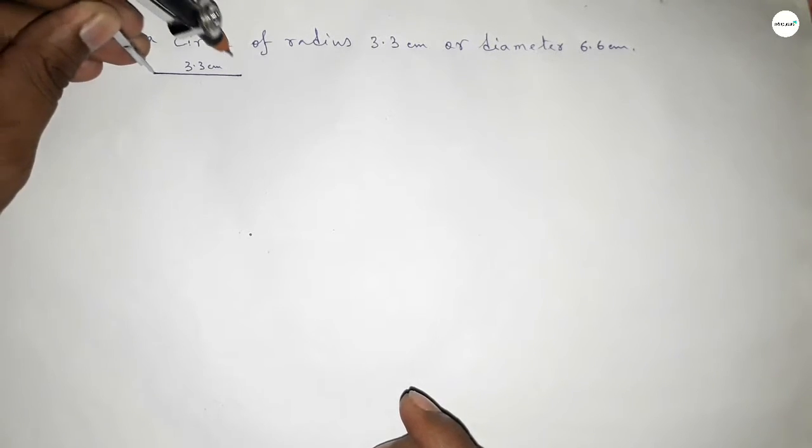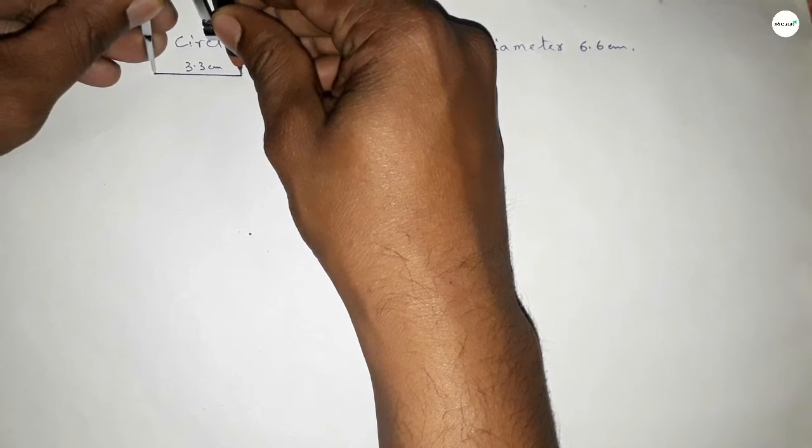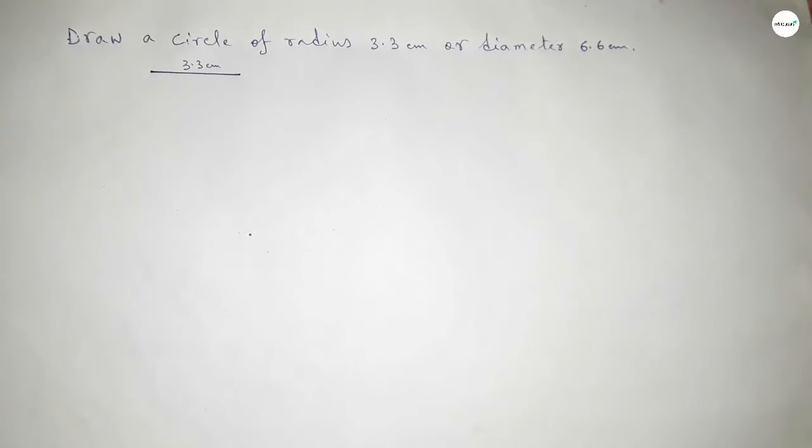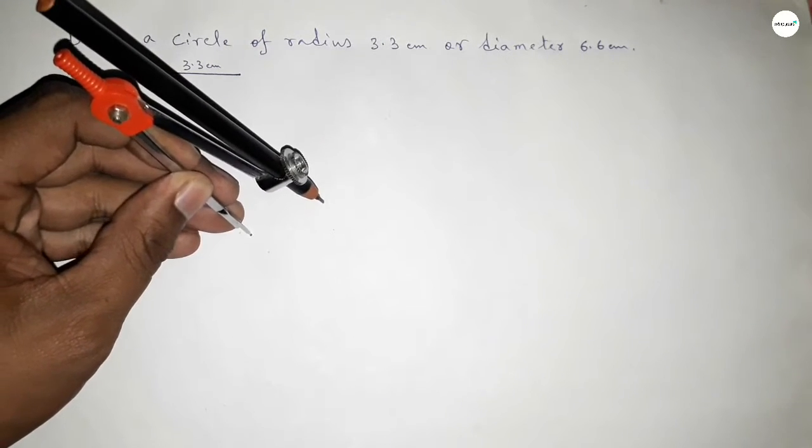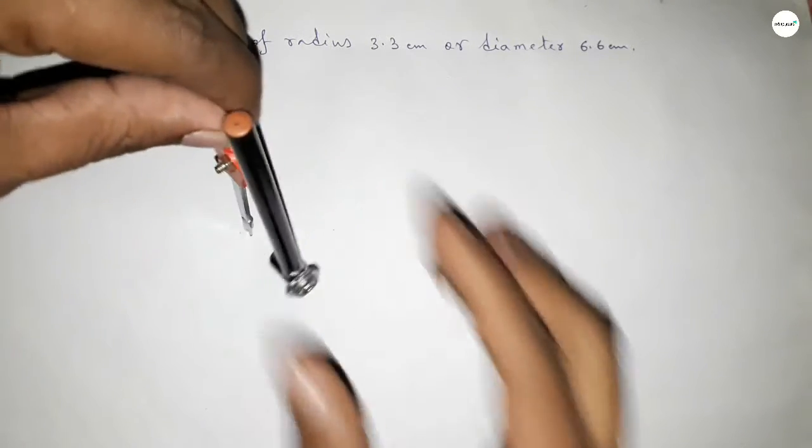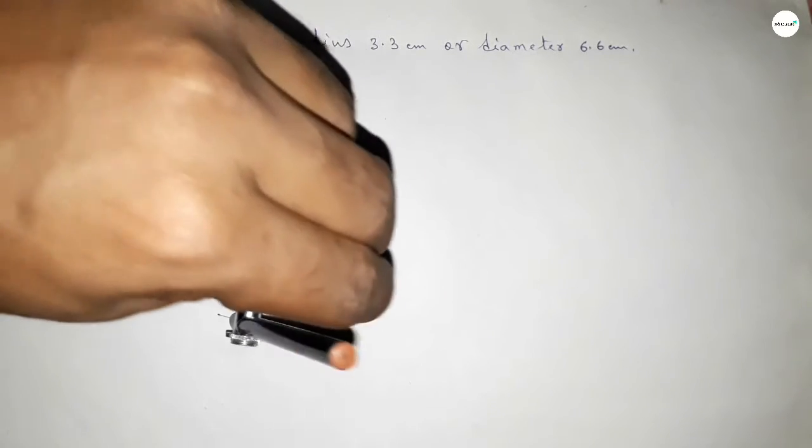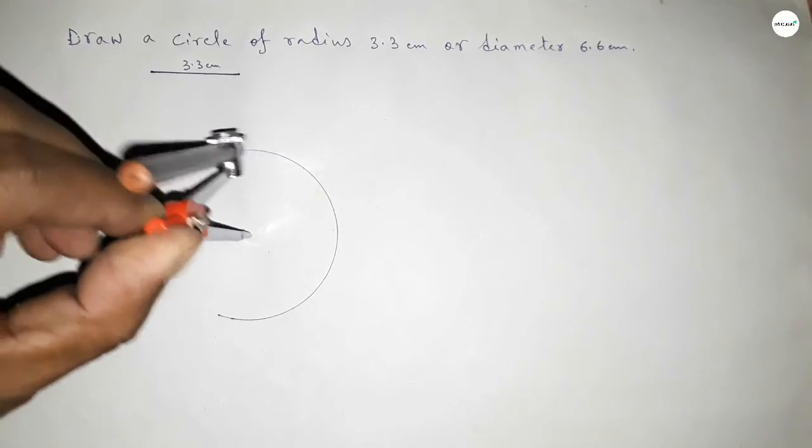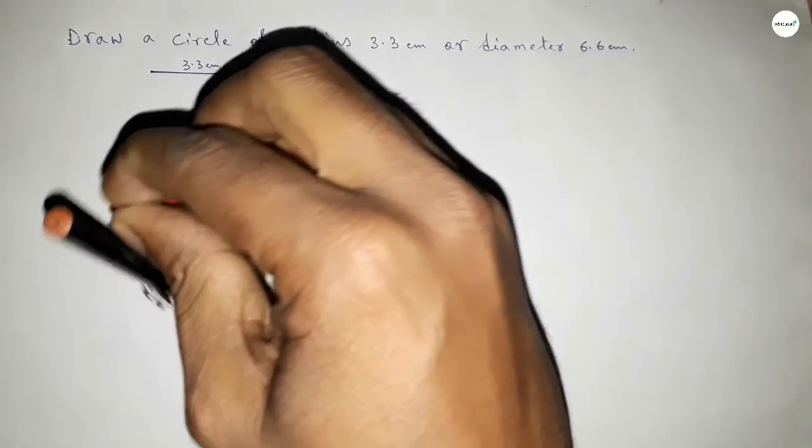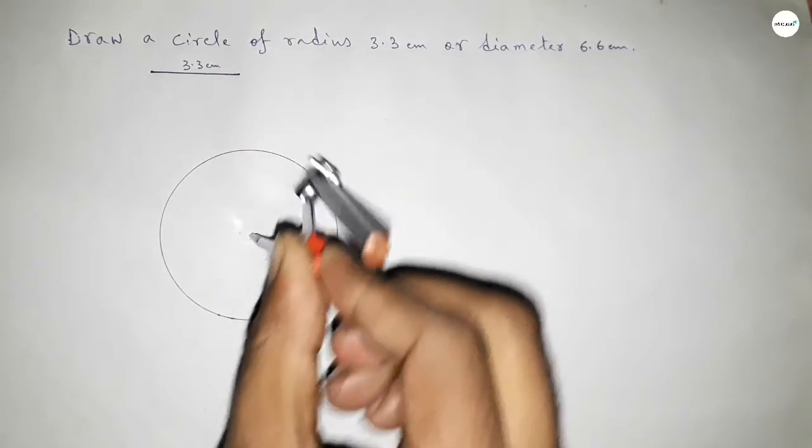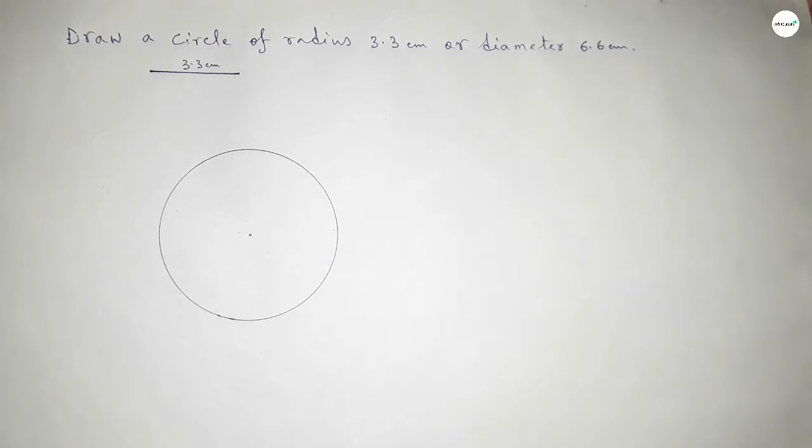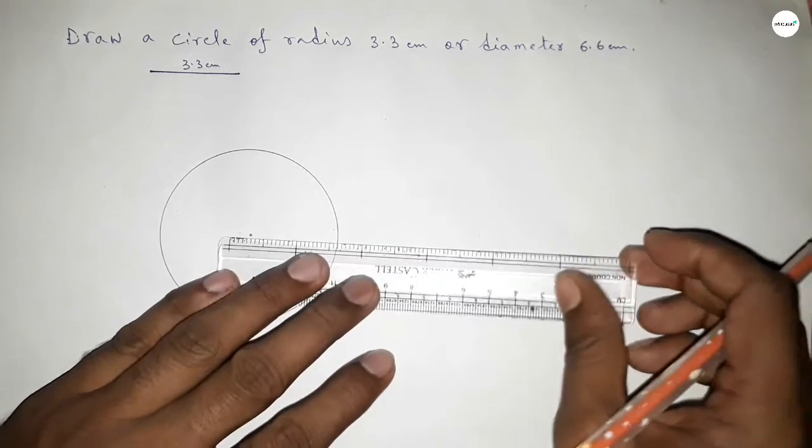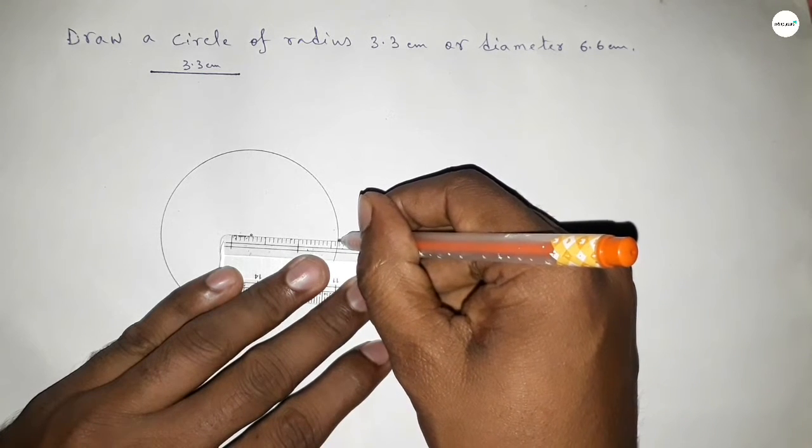Putting the compass on the point, next we have to draw here an arc by this way, which represents a circle with radius 3.3 centimeter. So now joining this one.